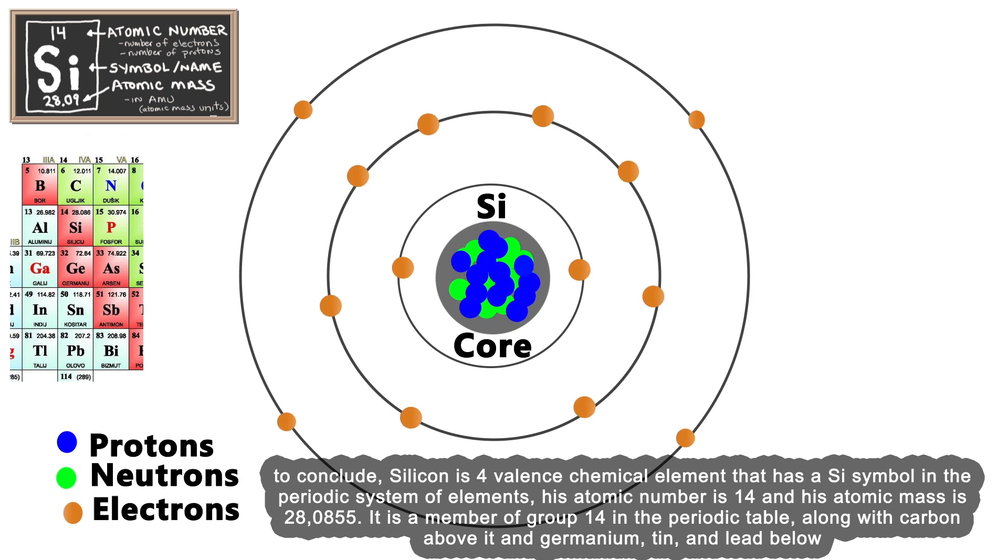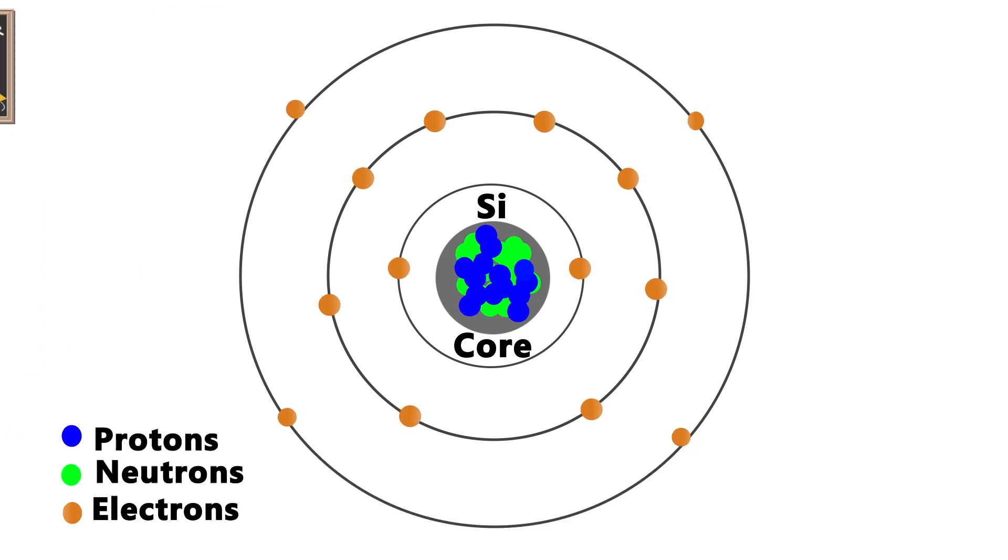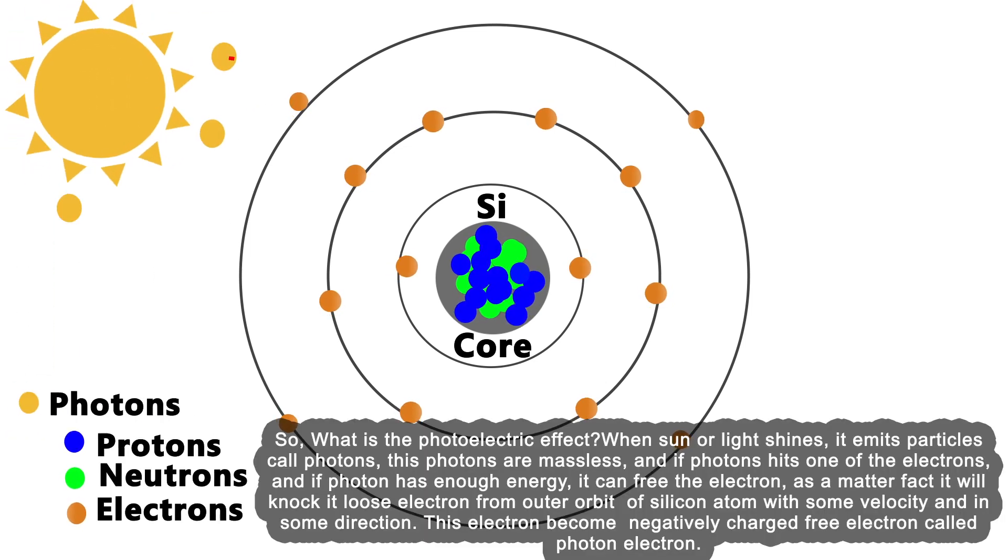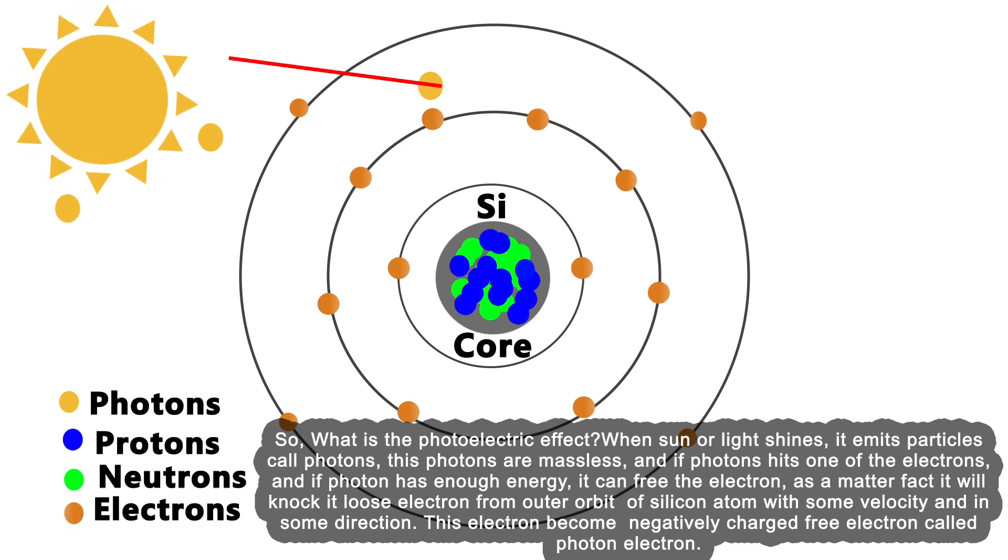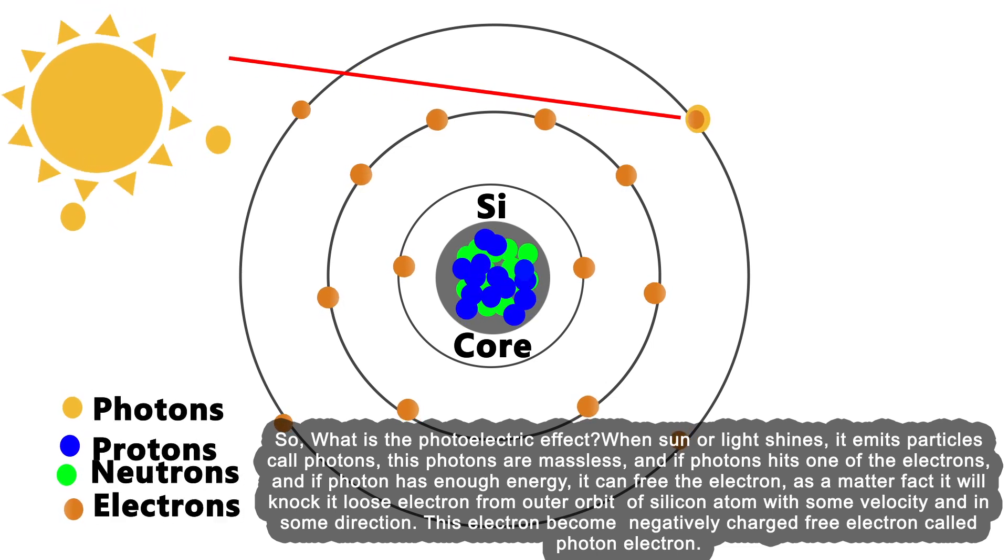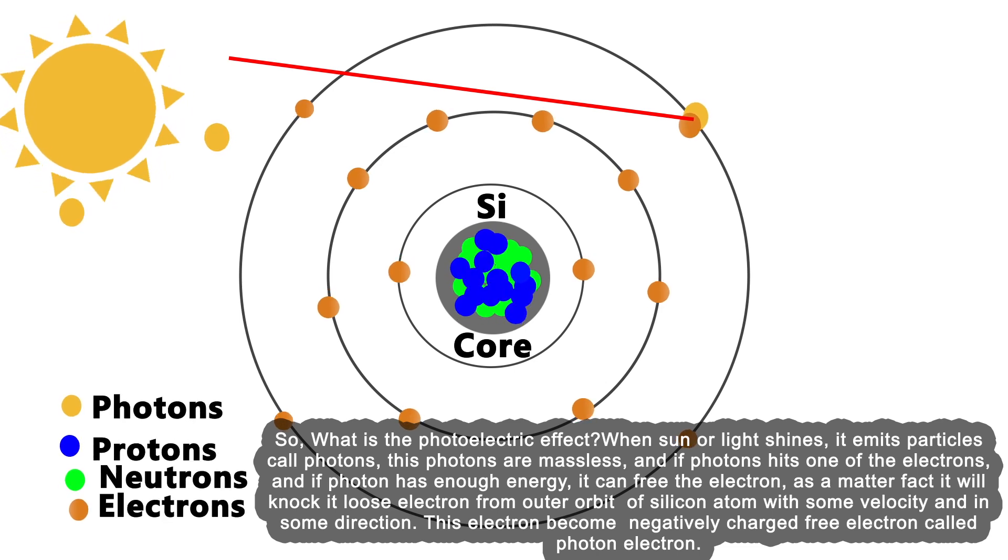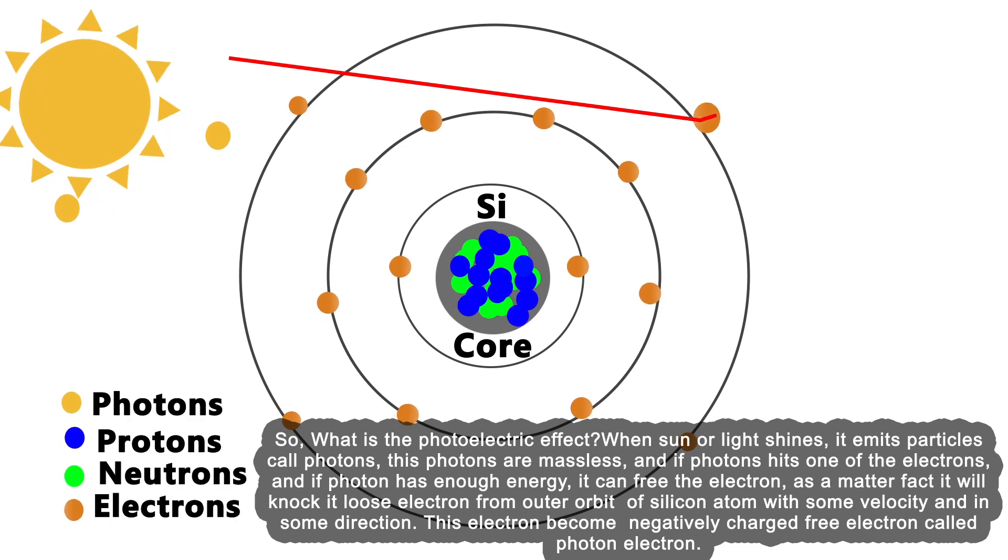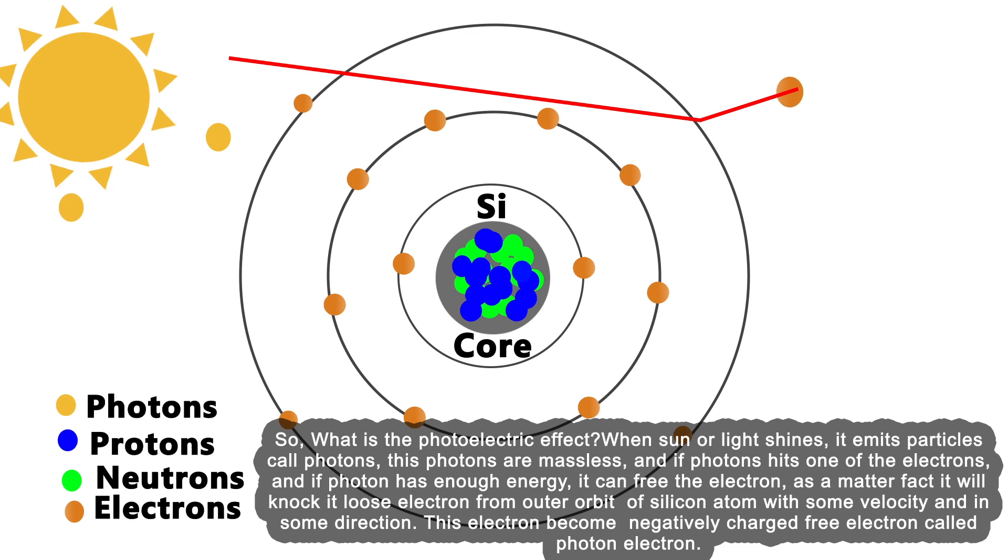So what is the photoelectric effect? When sun or light shines, it emits particles called photons. These photons are massless, and if a photon hits one of the electrons and has enough energy, it can free the electron.